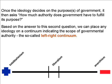In response to the second question posed by an ideology, we'll use a very simple analytical device known as the left-right continuum to distinguish among ideological alternatives. The left-right continuum is a tool used by political scientists to indicate the extent to which any ideology is willing to concede authority to government relative to other ideologies.